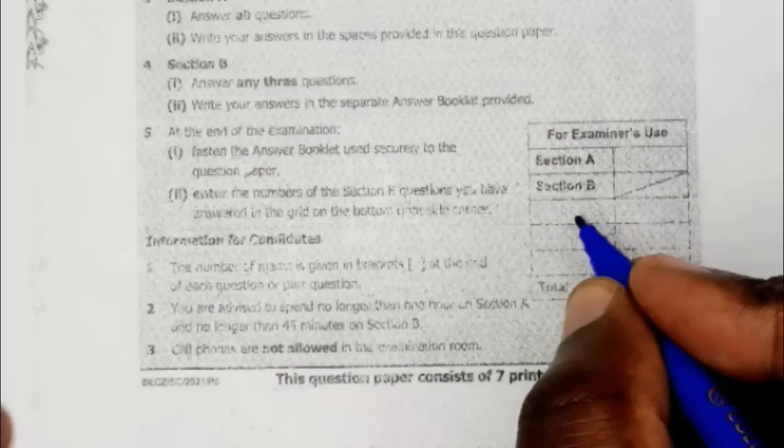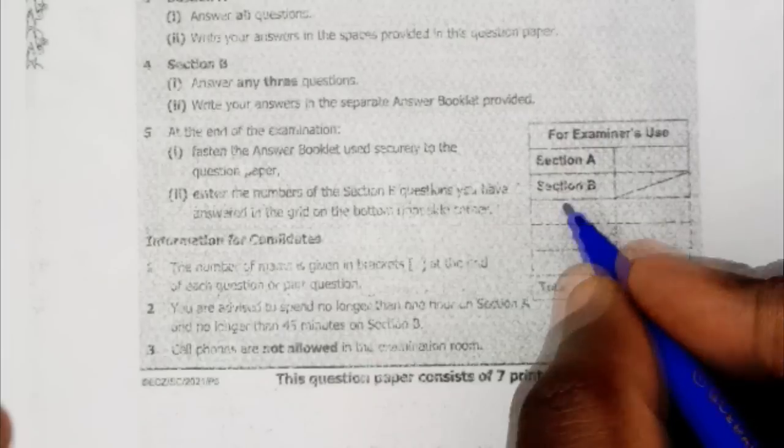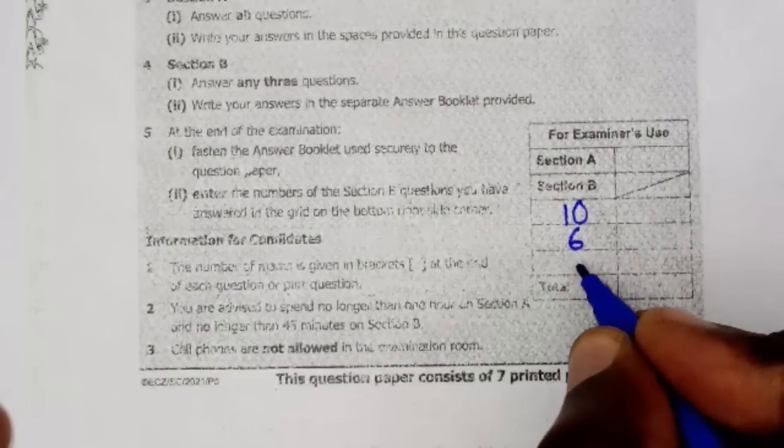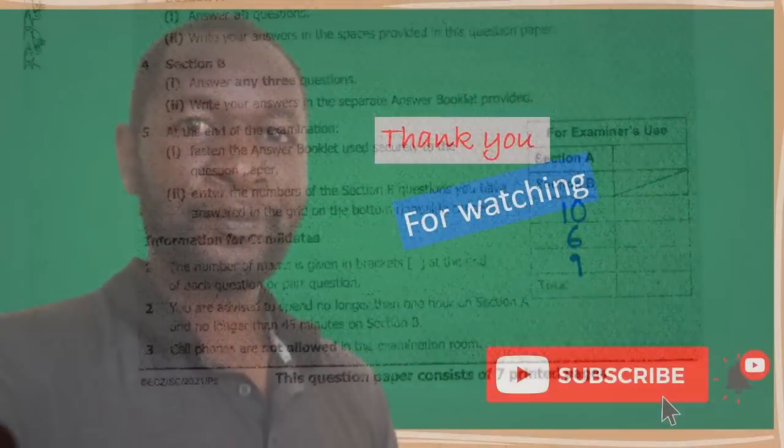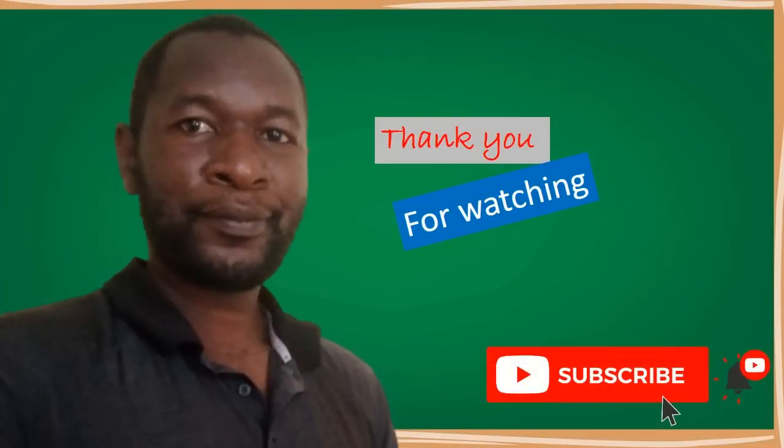When you are done with answering any three questions from section B, make sure to fill in your question numbers which you've answered under section B. For example, you can write question 10, 6, or 9. The order does not matter. That's all for this video. Thank you so much for watching. If you enjoyed this video, make sure you give it a like. You can also share it with your friends and subscribe to the channel if you have not yet subscribed so that you don't miss out any time I post a new video. Thank you so much for watching. I'll see you again in the next video. Bye for now.